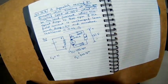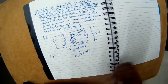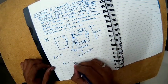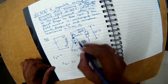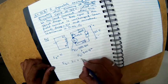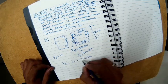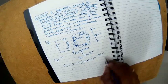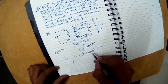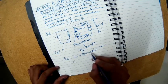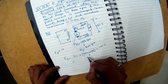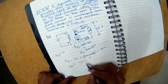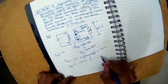Now I can calculate EG1, the EMF generated. That will be 2 volts brush drop, plus the voltage drop in the armature resistance which is 0.04 × 200 = 8 volts, plus the output voltage of 125 volts. So 8 plus 2 is 10, and 10 plus 125 is 135 volts. For a generated EMF of 135 volts, the speed corresponding to it is 1000 RPM.